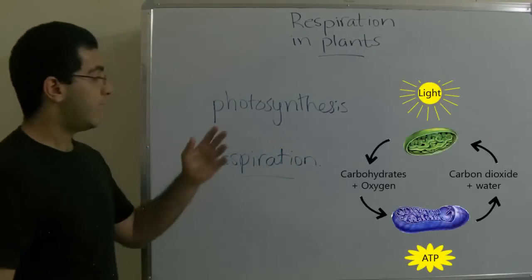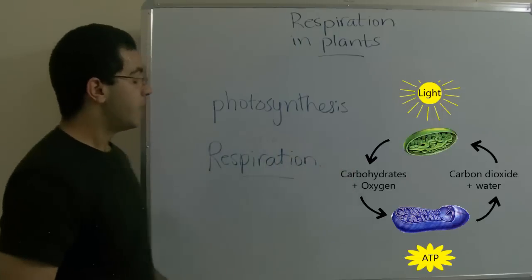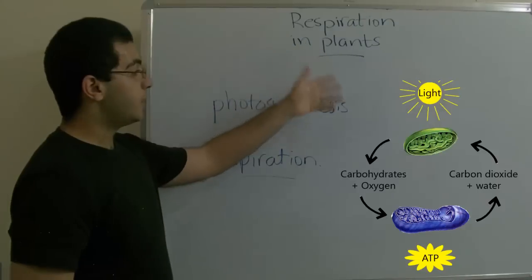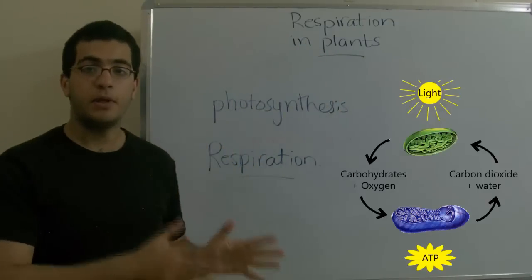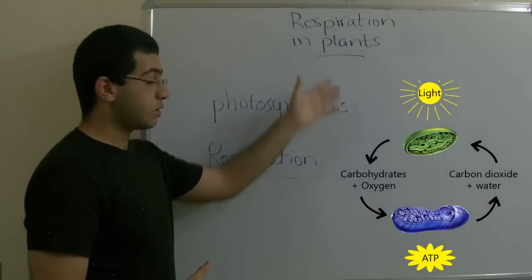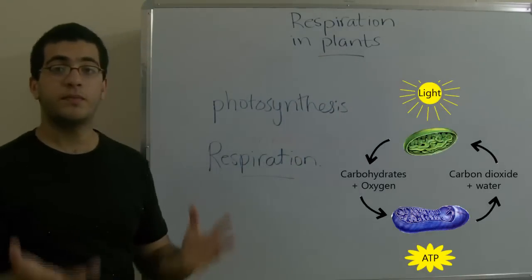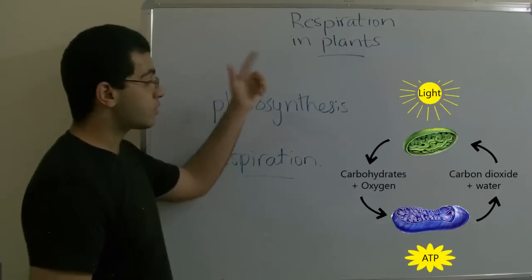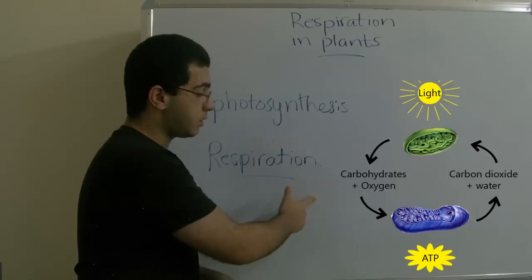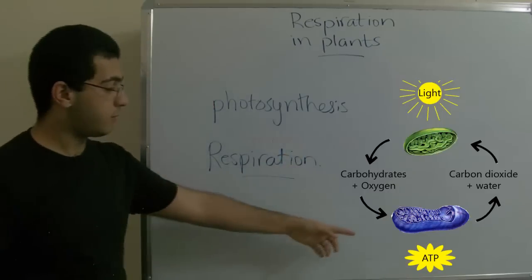As we can see in this figure here, photosynthesis which happens in the chloroplasts produces certain materials such as glucose. This glucose is traded and goes into the mitochondria which produces energy in the form of ATP.